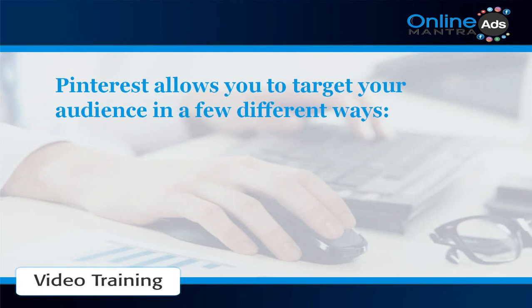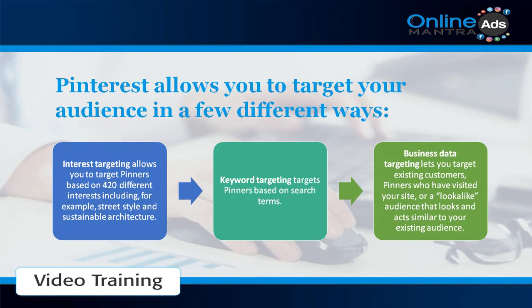Pinterest allows you to target your audience in a few different ways. Interest targeting allows you to target pinners based on 420 different interests, including for example street style and sustainable architecture. Keyword targeting targets pinners based on search terms. Business data targeting lets you target existing customers, pinners who have visited your site, or a lookalike audience that looks and acts similar to your existing audience.